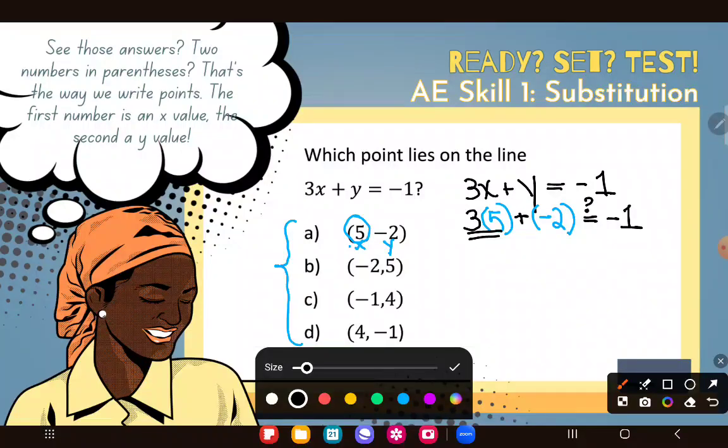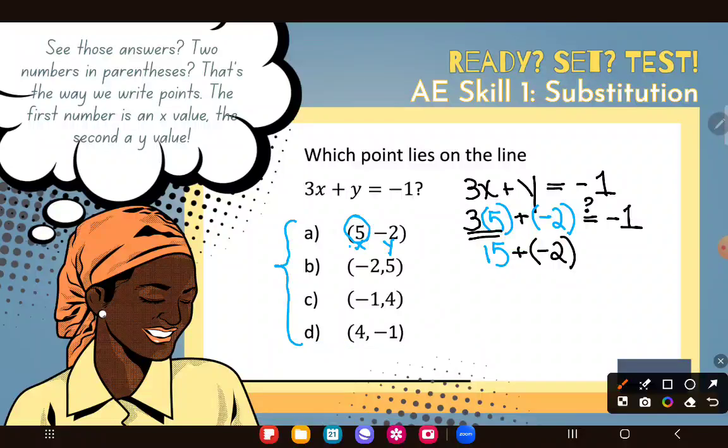So I'm going to do the 3 times 5. 3 times 5 is 15. And I still haven't added that with negative 2. I can just drop down plus negative 2, but I'm such a lazy mathematician. I know that adding a negative number is the same as just subtracting. Like if I add debt into my account, it basically takes money out of my account. So I'm going to write 15 minus 2.